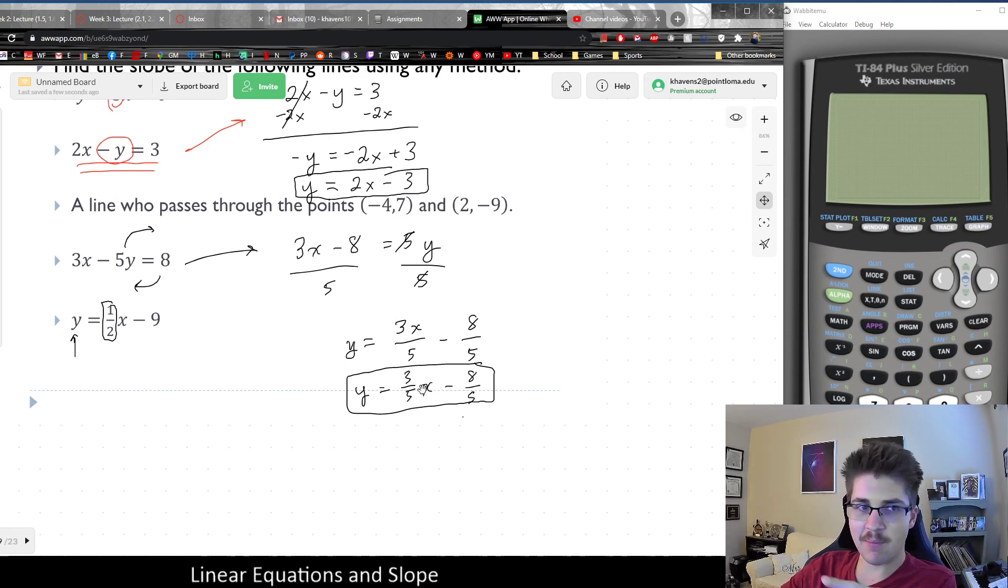But long story short, our slope here is going to be positive 3 fifths. That's just one of many ways to figure it out. Another way to figure it out is by graphing the line, as we've done a couple times, or just again taking the ratio of negative a over b, which again would just be negative 3 over negative 5, which would be 3 fifths. That wraps up this video on slope. And we'll talk a lot more about equations in the upcoming class.